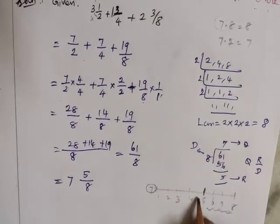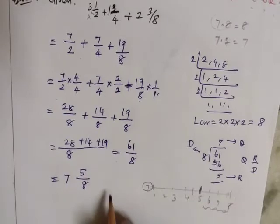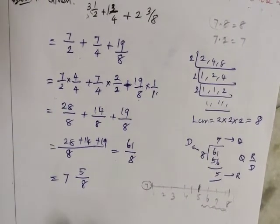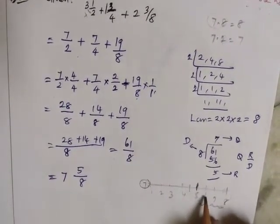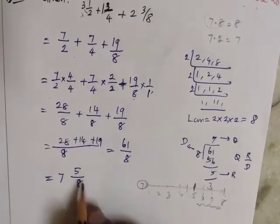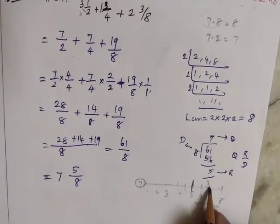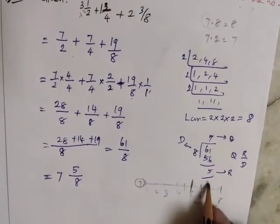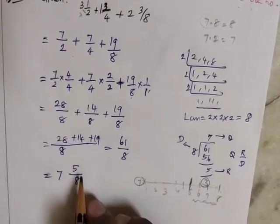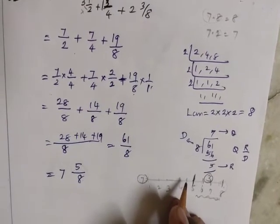To reach the nearest whole number 8, we have 7 5/8. What should we add? We need to add 3/8. If we add 3/8 to 7 5/8, it becomes 8.